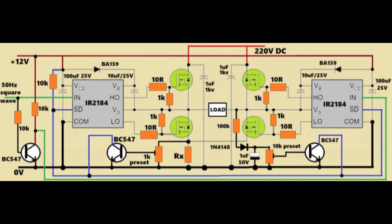Across the output load, we see two 1UF/1KV capacitors, which help to kill spikes and filter some noise.